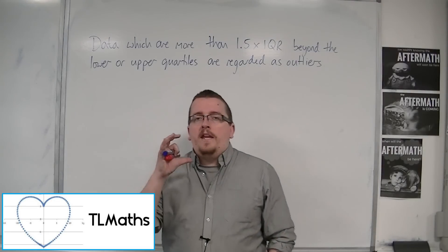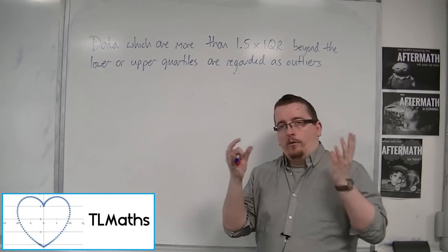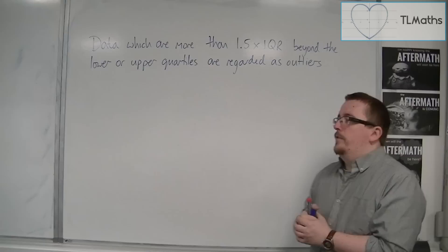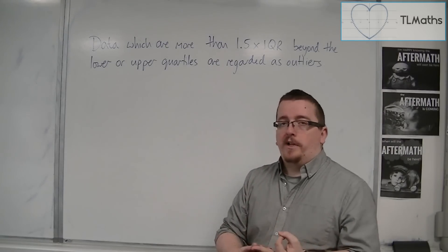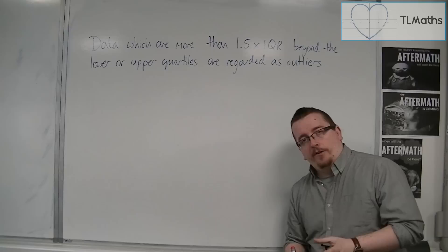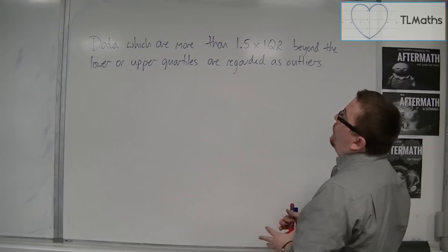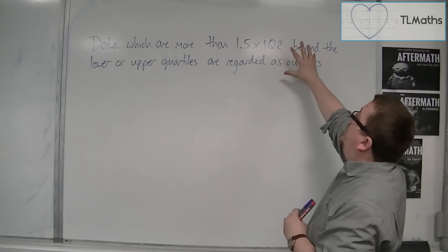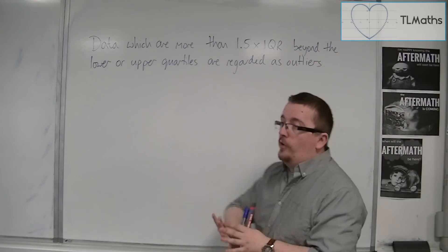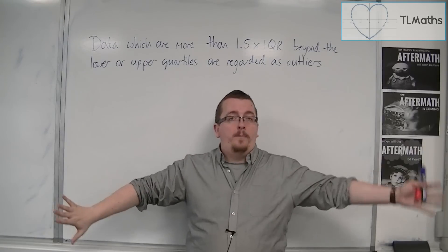Now, if you're thinking about outliers and the data you have includes the median, upper quartile, and lower quartile, how you identify those is by looking at 1.5 times the interquartile range beyond either the lower or upper quartile.